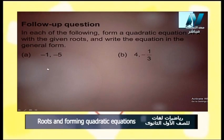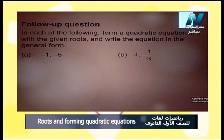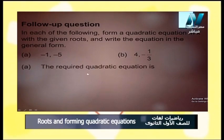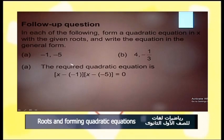Let's move to the next slide — follow-up questions. In each of the following, form a quadratic equation in x with the given roots and write the equation in general form. Part a: roots negative 1 and negative 5. Part b: roots 4 and negative one-third. For part a, the required equation is x minus negative 1 multiplied by x minus negative 5 equals 0, which simplifies to x plus 1 multiplied by x plus 5 equals 0.